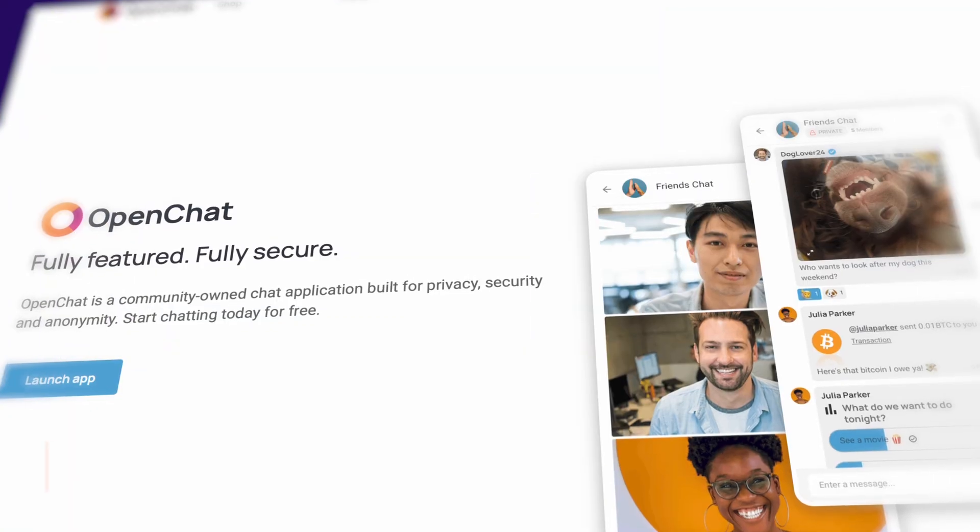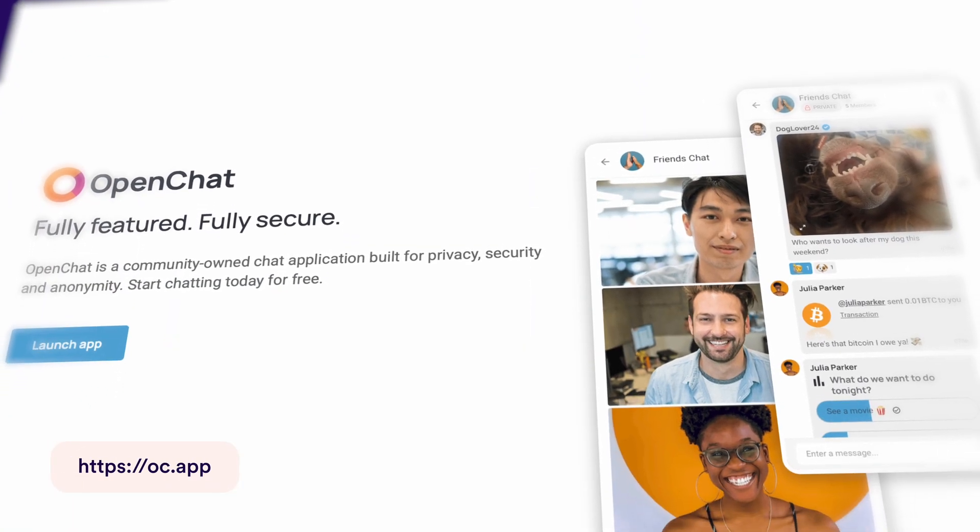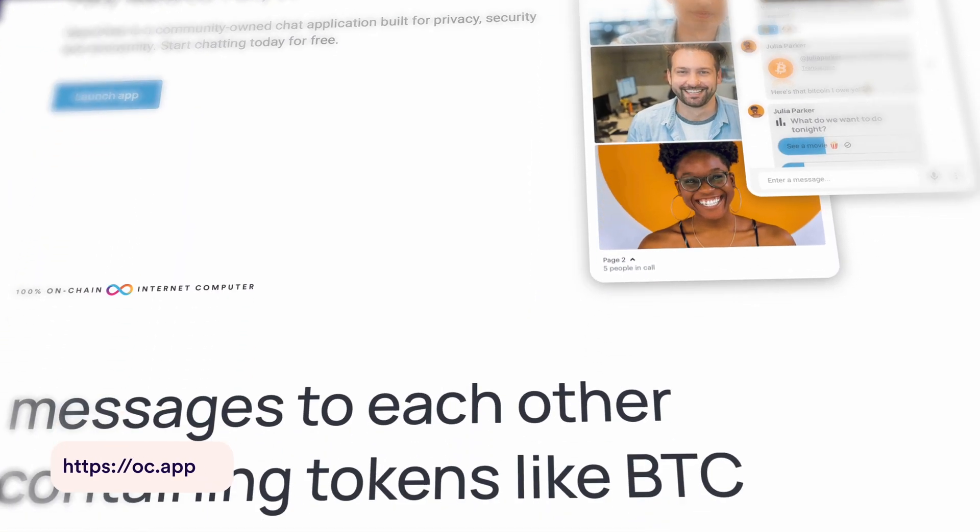ICP allows your entire app to live and be served from the blockchain. This isn't theoretical. Right now, OpenChat serves a full messaging app to more than 100,000 users and thousands of other dApps are also running fully on-chain.